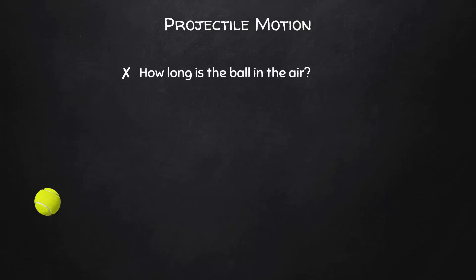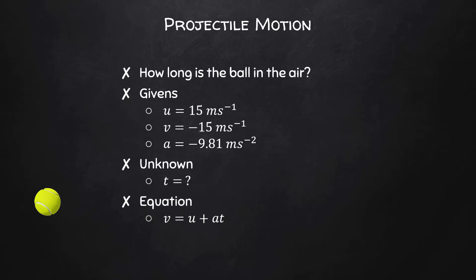Now let's figure out how long the ball is in the air. Again, we know that the initial vertical velocity is 15 meters per second. But this time, since we care about the entire flight of the ball, we can say that the final velocity is negative 15 meters per second. Once again, the acceleration is negative 9.81 meters per second squared. And our unknown in this case is going to be t. Based on those variables, we can select the equation v equals u plus at. We can substitute in our known values and then solve, finding that the time is 3 seconds.